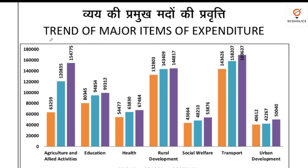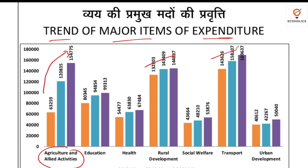Looking at the trend of major expenditure items, agriculture and allied activities is going up, along with transport and rural development. These three are the important pillars that the government is spending on to boost the economy.